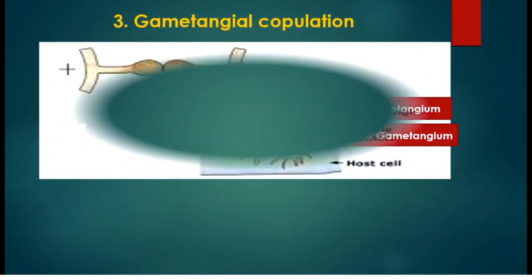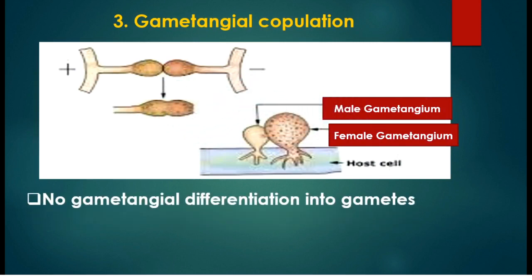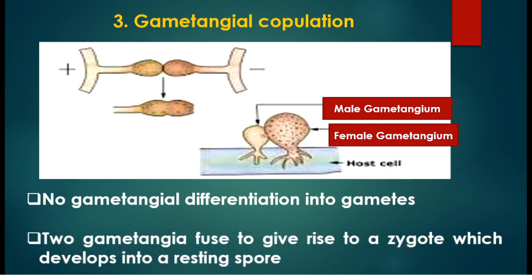The third method is gametangial copulation. In gametangial copulation there is no differentiation of gametangia into gametes. Two gametangia fuse and give rise to a zygote, which develops into a resting spore.